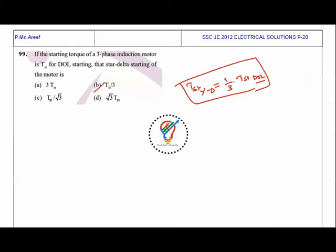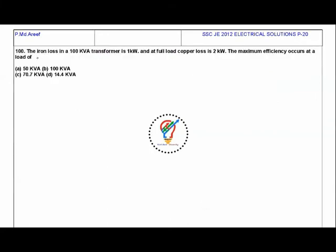Next question: the iron losses in a 100 kVA transformer is 1 kilowatt and full load copper losses is 2 kilowatts. The maximum efficiency occurs at a load of kVA at which efficiency maximum occurs is equal to kVA full load into square root of iron losses by copper losses.